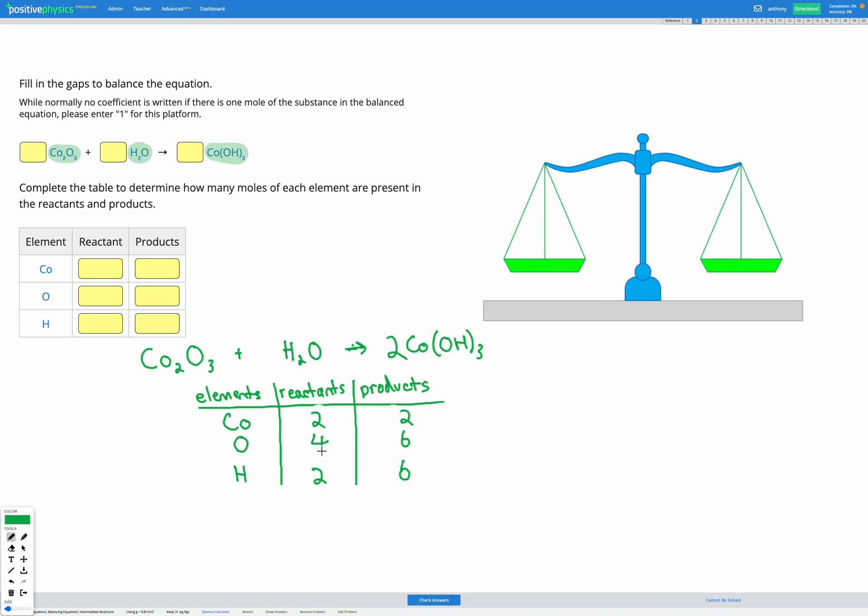However, our O and our H both have too few on the left hand side in the reactants. And we have both of those in H2O, that compound. So I'm going to add an extra H2O to the left, so that we're adding some O and some H and see how that affects us.